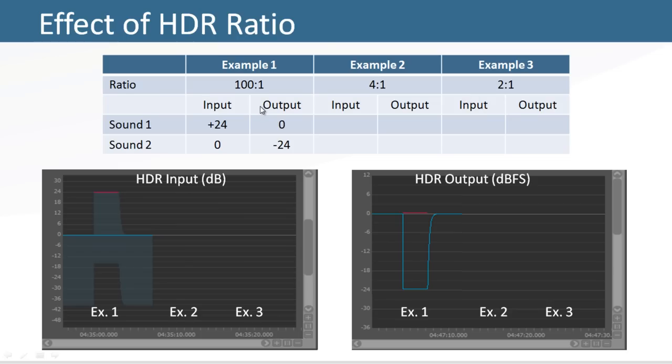For the first example, a ratio of 100 to 1 gives an almost infinite ratio. Consequently, the volume of plus 24 dB will output at 0 dB, and a volume of 0 dB will output at minus 24 dB.